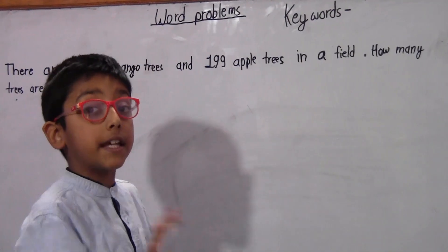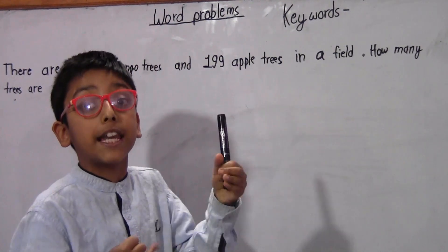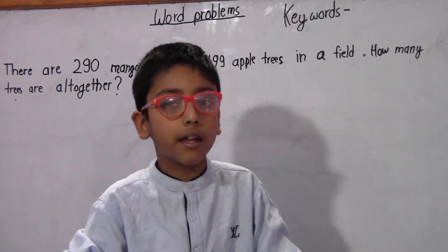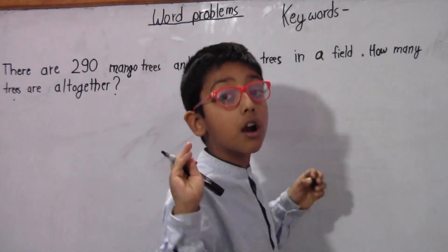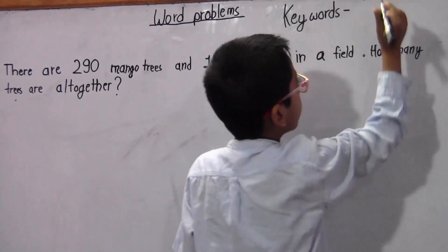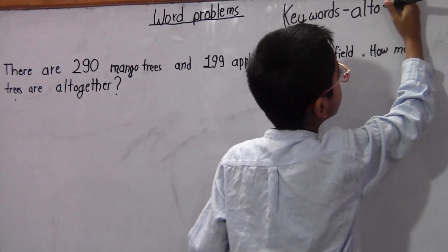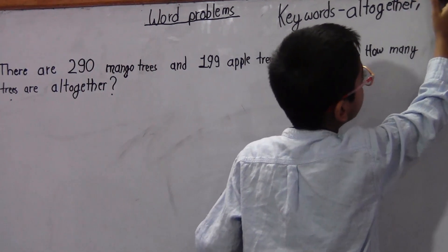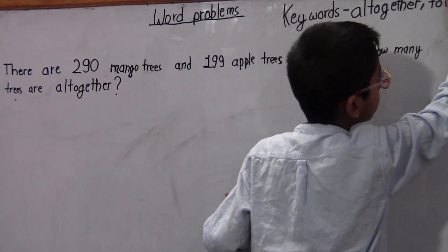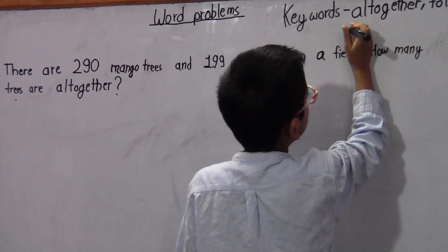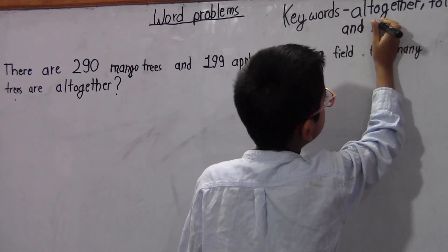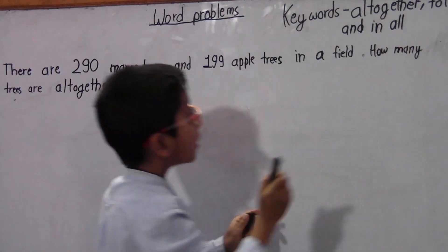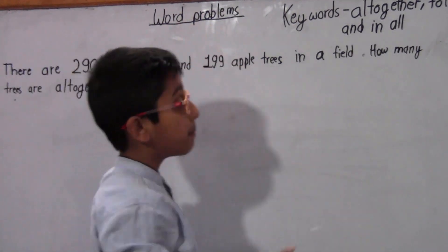For word problems — in every word problem in addition, subtraction, multiply, and divide — we must know the keywords, so it will be easier to solve these word problems. Let's write the keywords. The keywords for addition are: altogether, total, and, in, all. These are the keywords of word problem addition.